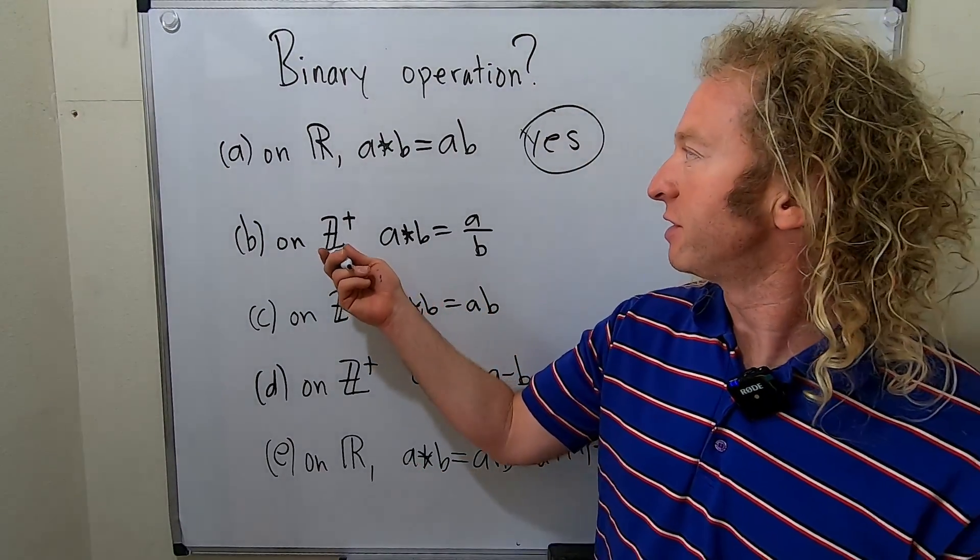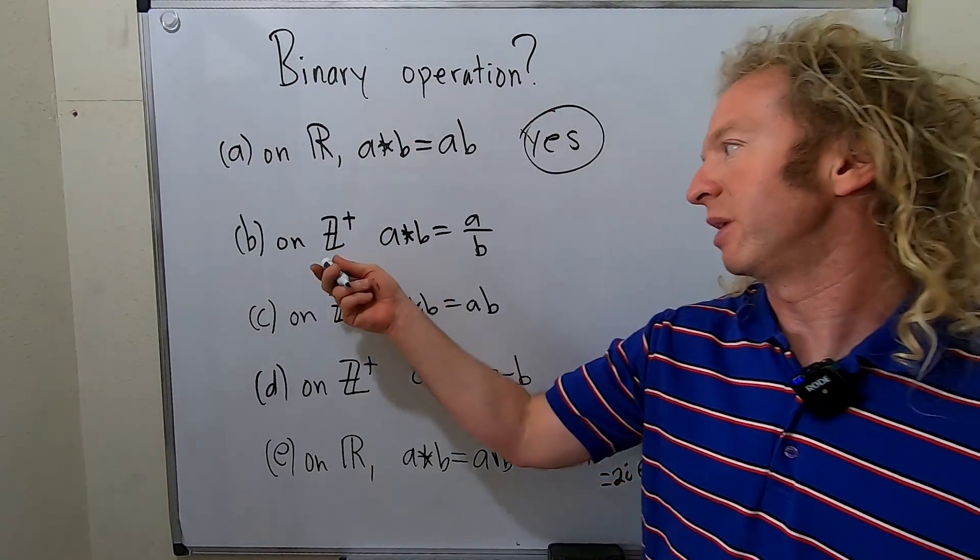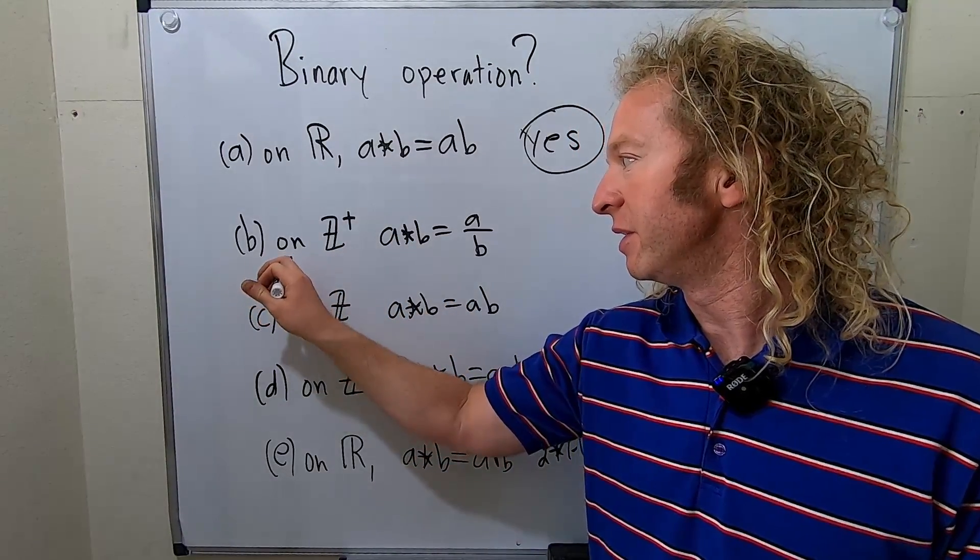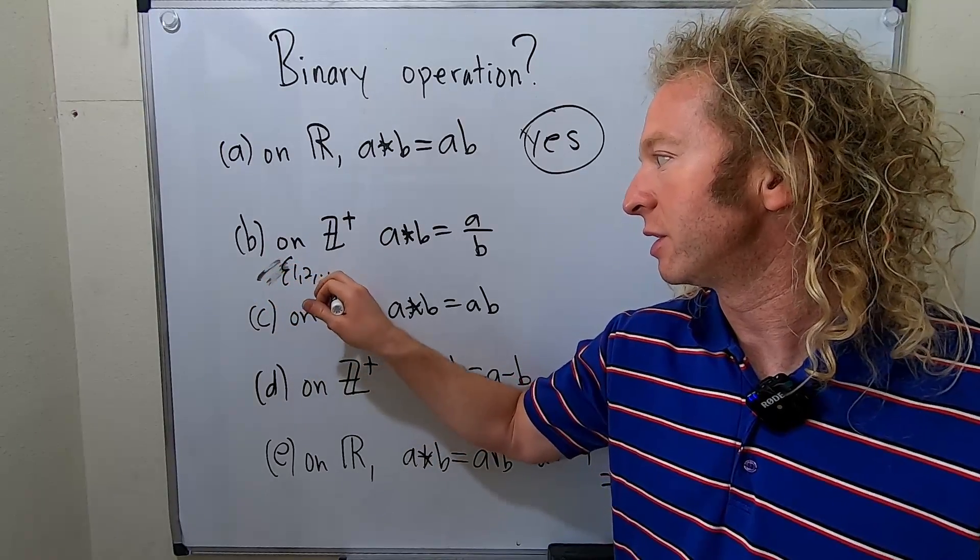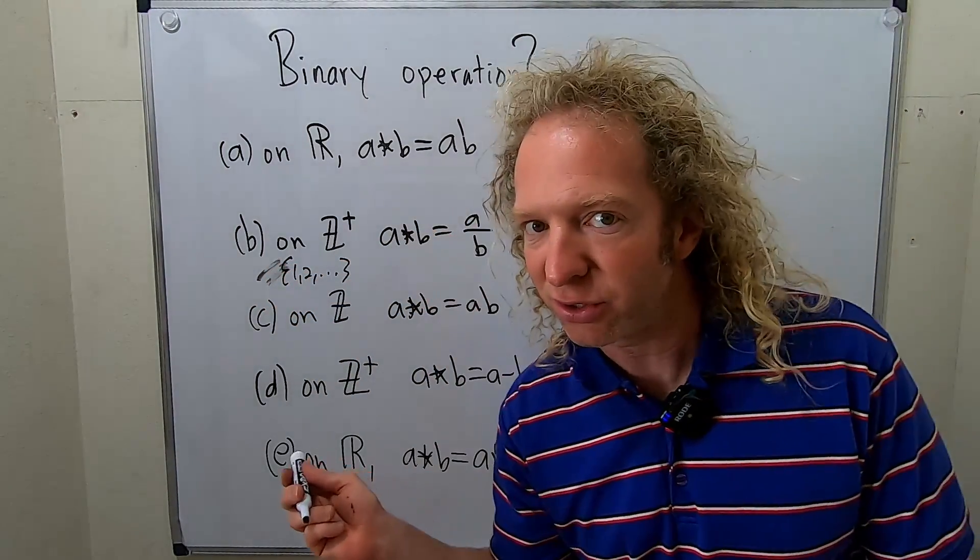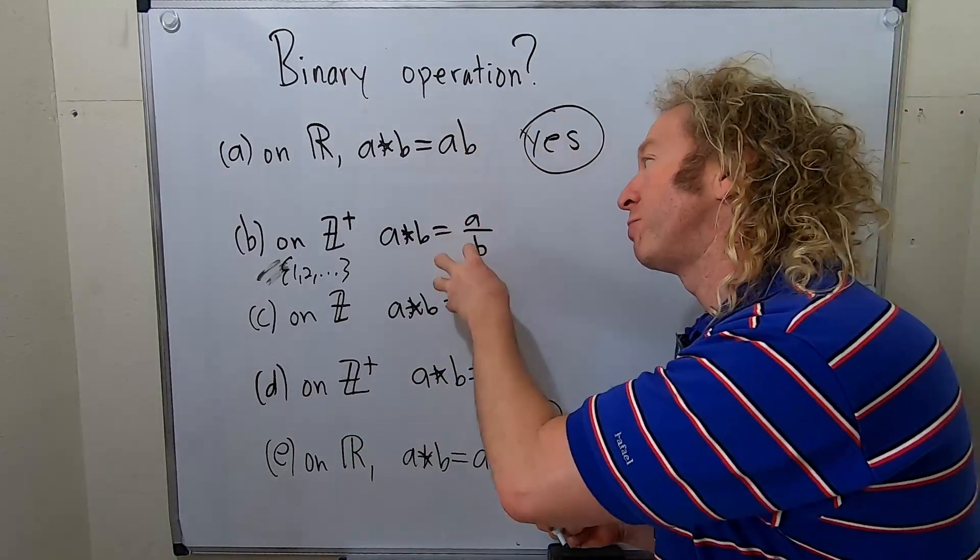How about this one? On the set of positive integers, that's what this is, like one, two, three, four, five. This thing here is just one, two, dot dot dot. Is this a binary operation? So given any two integers, any two positive ones, does this produce a positive integer?